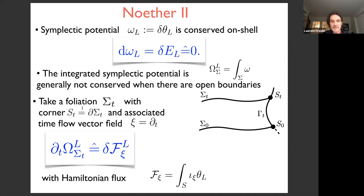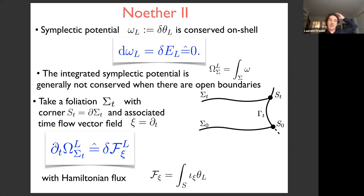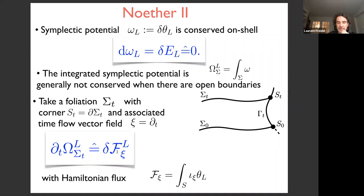If we take a foliation of sigma_t with corners — I refer to the two-sphere at the corner of the slice as corners — and consider a vector field psi as the time evolution vector field d/dt, the integrated symplectic form is not conserved in time. This means the theory is not truly unitary; there's a leak of symplectic information through open boundaries. This leak is controlled by the Hamiltonian flux, which is the contraction of the vector field psi with the symplectic potential.